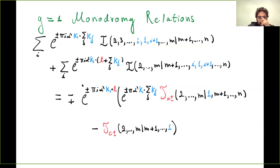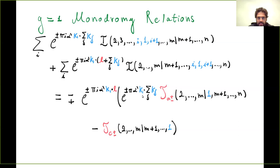These are the genus-one monodromy relations. They have a structure just like the tree-level ones: when a particle jumps between others, it accumulates phases. But if it jumps from one boundary to another, it also gets a factor of the loop momenta. The new J terms — integrals along the A cycles — appear with phases depending on the loop momenta and particle positions. There are two of them, one for the bottom and one for the top of the rectangle.